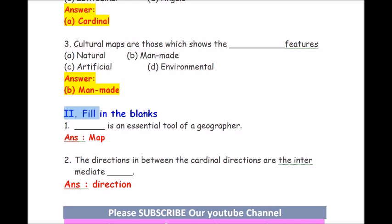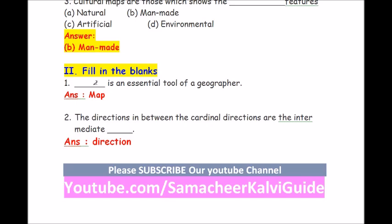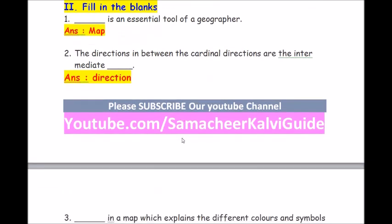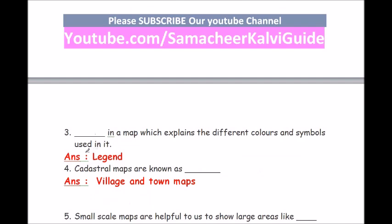Roman number 2, fill in the blanks. Question 1: dash is an essential tool of a geographer. Answer is map. Question 2: the directions in between the cardinal directions are the intermediate directions. Question 3: dash in a map which explains the different colors and symbols used in it. Answer is legends or keys.